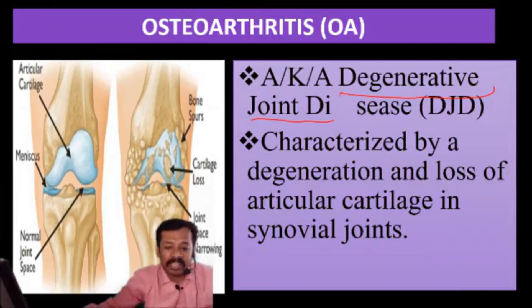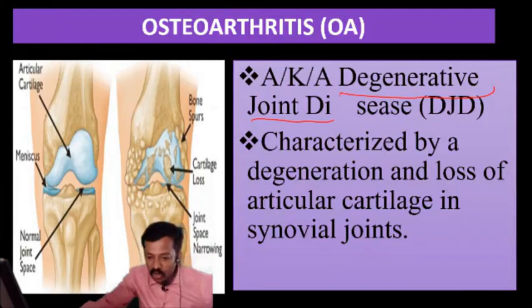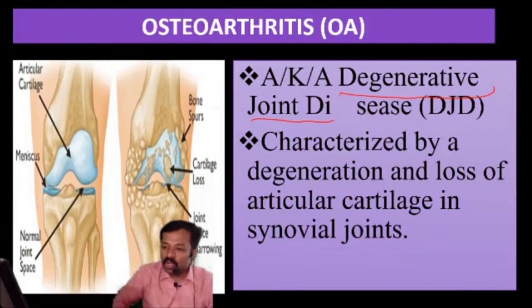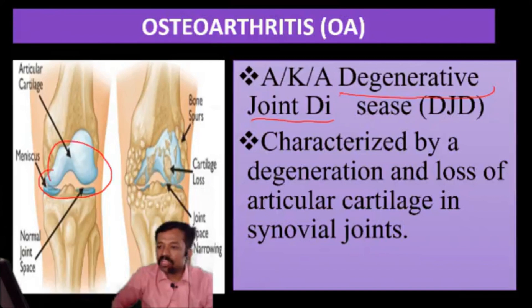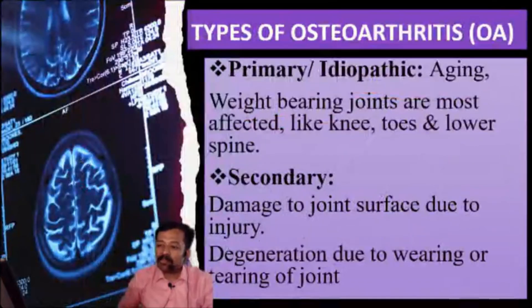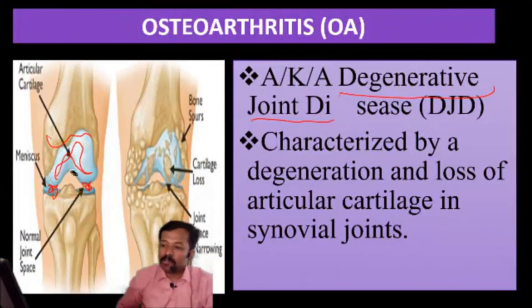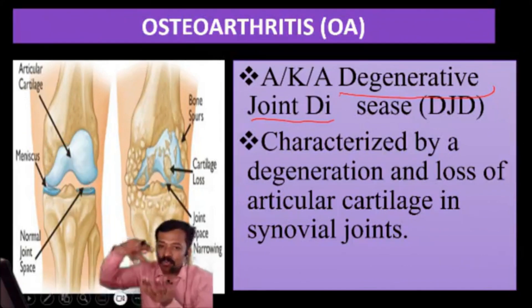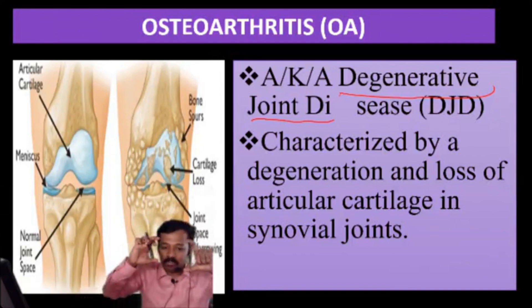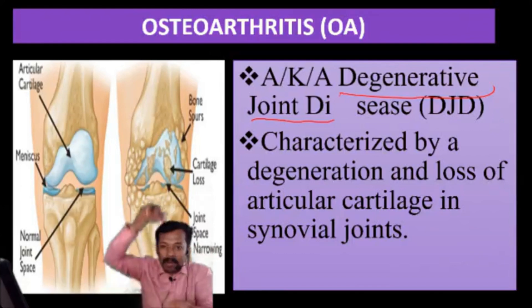What is DJD — degenerative joint disease? Look here: it is a joint where two bones are joining together with the help of cartilage. There is a cartilage layer attaching both bones, and there is a plate for avoiding friction.